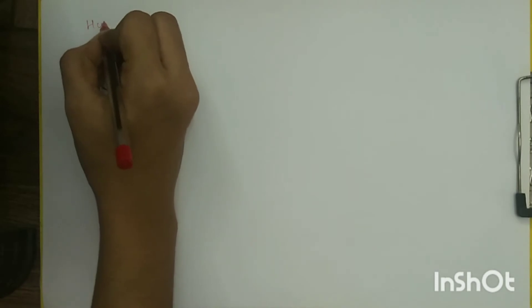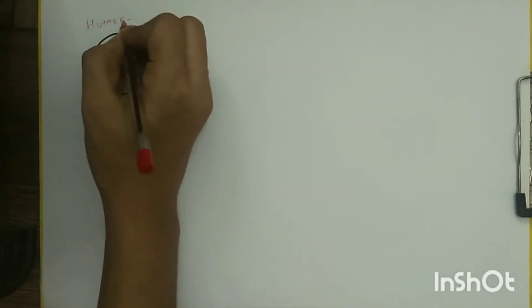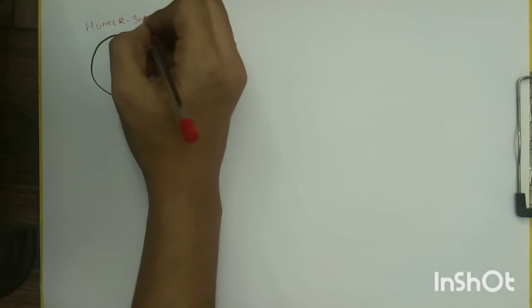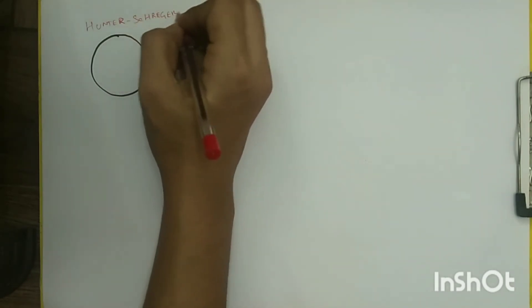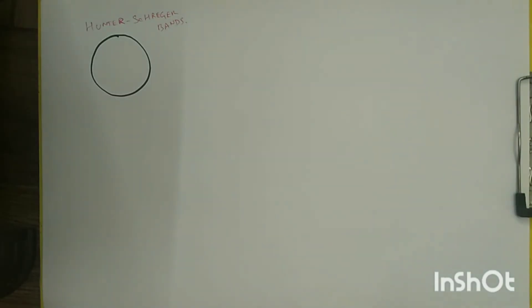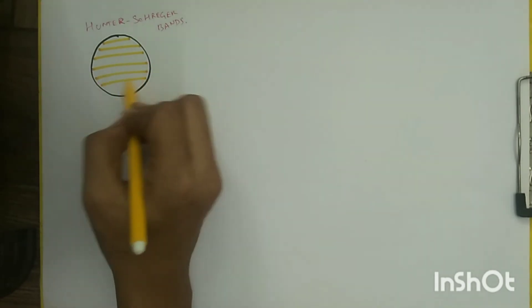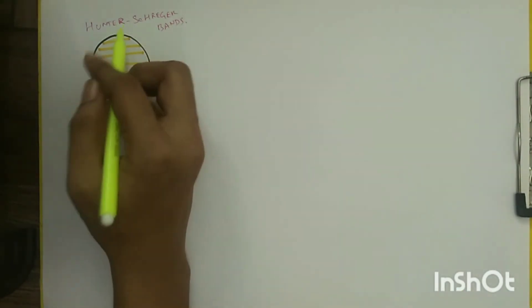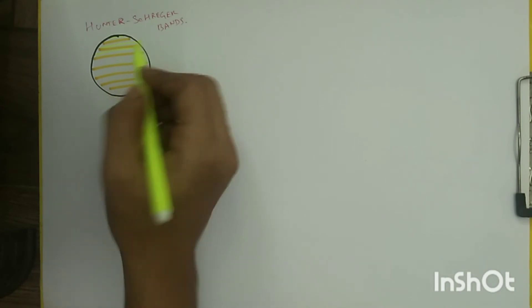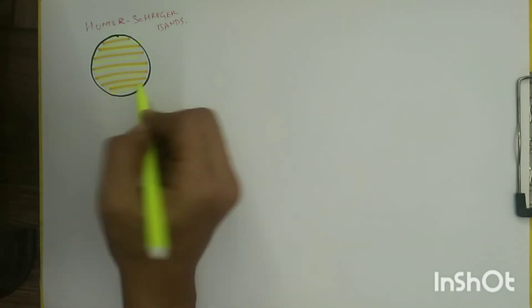Hunter-Schreger bands are seen as alternating light and dark bands of varying width when longitudinal ground sections of enamel are viewed under oblique reflected light. They are seen in the inner two-thirds of the enamel thickness and disappear as the outer part of the enamel is approached.